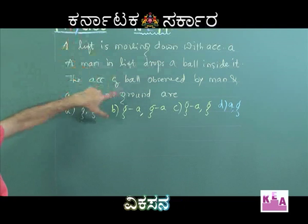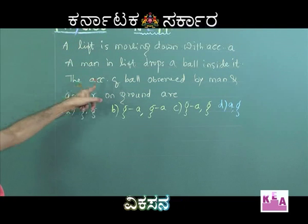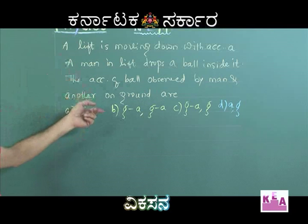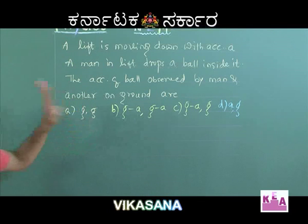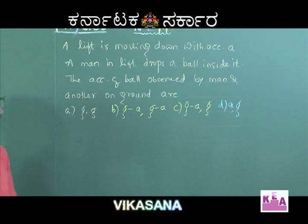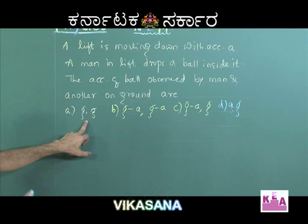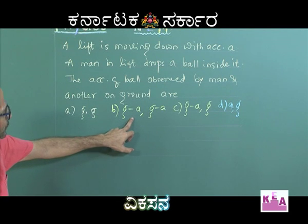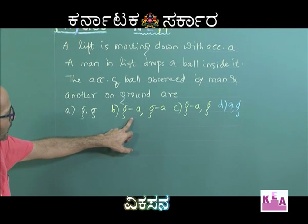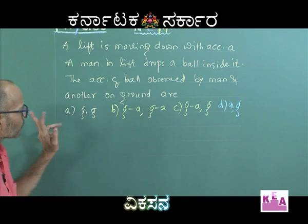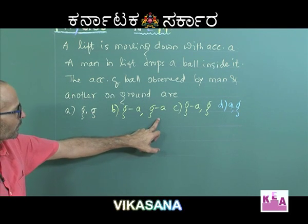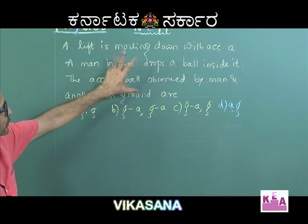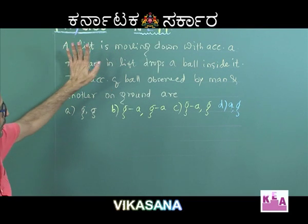Ground is an inertial frame of reference and the lift is a non-inertial frame of reference. Therefore, the acceleration of the ball as seen from an inertial frame and as seen from a non-inertial frame cannot be equal. So G and G are ruled out — both accelerations cannot be G. G-A and G-A are wrong again because both are equal, and the accelerations in the two frames cannot be equal.